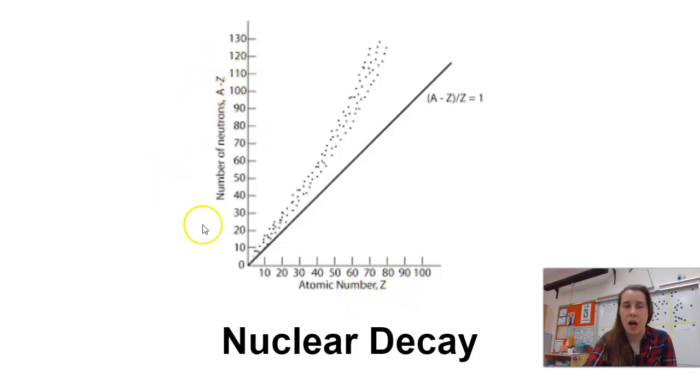On the y-axis, we have the number of neutrons. Protons and neutrons are the two things in our nucleus. For relatively small atoms, we want about the same number of protons and neutrons, and that's what this line represents. If every atom was stable with an equal number of protons and neutrons, all the dots would be on that line.